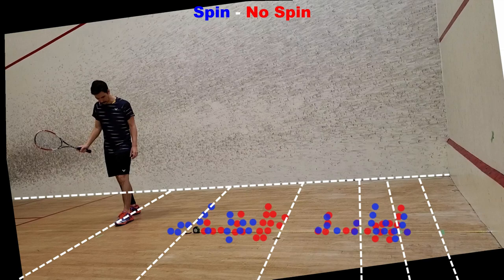The first bounce however, there didn't seem to be much difference. So even though the shots with spin were being hit slightly harder, they still landed around the same place as the shots without spin, but bounced further.